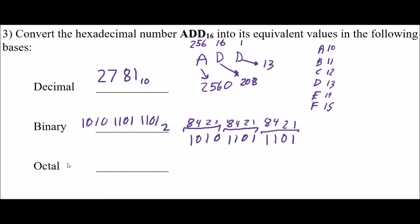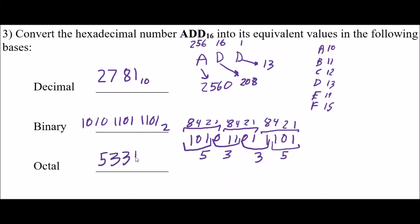Once I have binary, octal is a piece of cake. I take my binary number and group them in terms of 3s. 1s, 2s, 4s place — that is a 5. Next group of 3: 1s, 2s, 4s place — that's a 3. My next group — that's another 3. And my next group — 1s, 2s, 4s place — that is a 5. So I have 5, 3, 3, 5. That is my octal number and I am done.